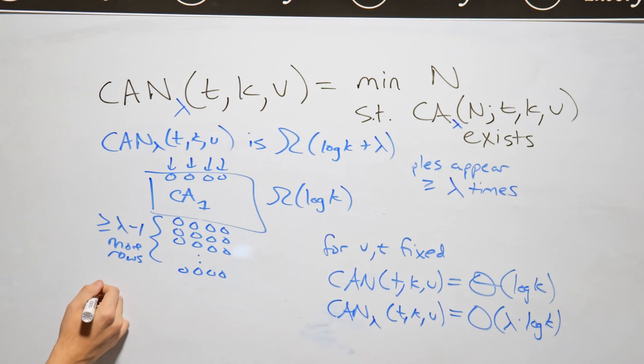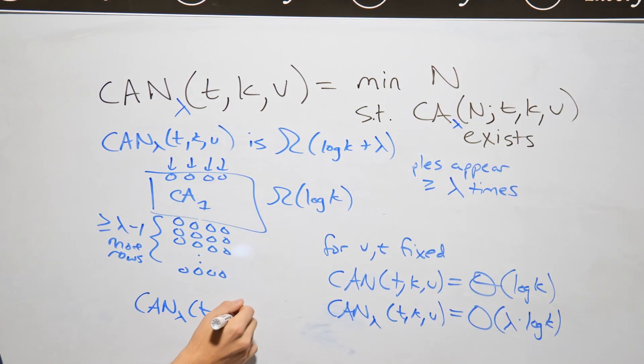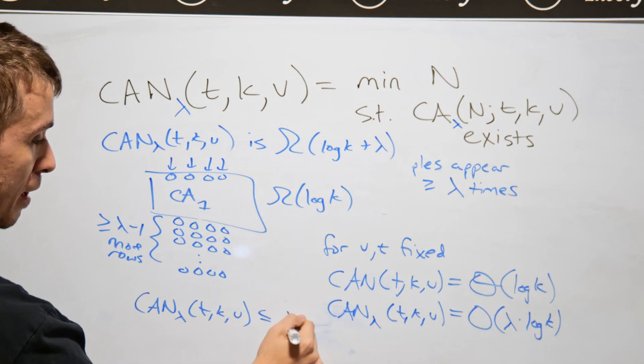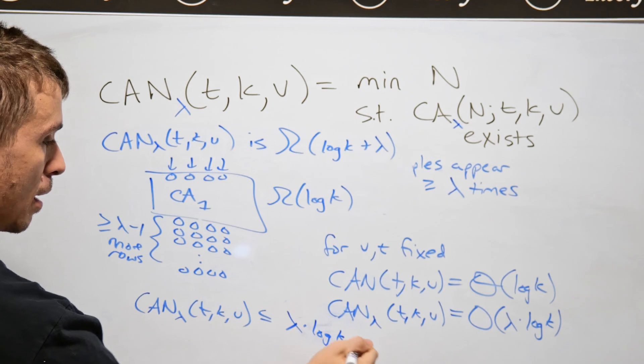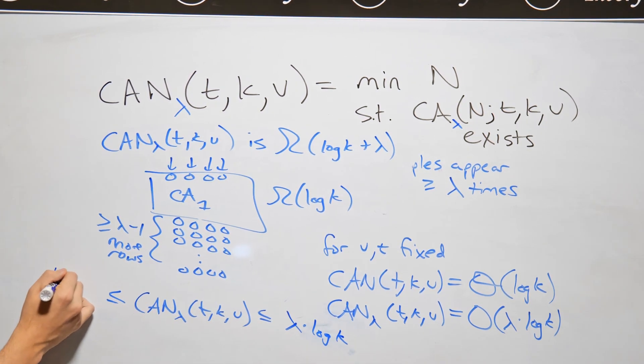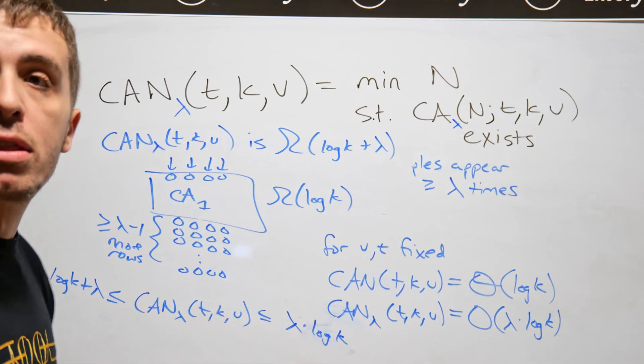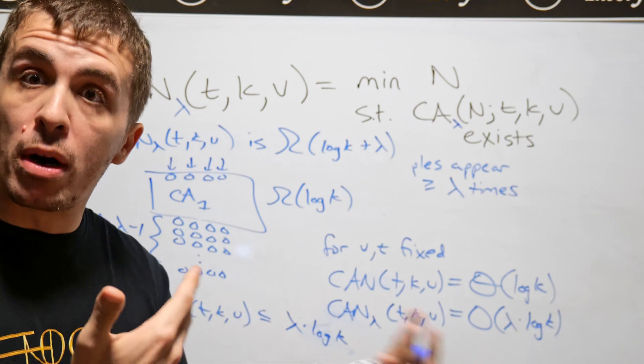Let's summarize what we have. What we have is that CAN lambda t k v is at most, I'm going to suppress the constant here, lambda times log k, and it's at least log k plus lambda. And it's not immediately obvious that where the true bound actually is, whether it's all the way down here, or whether it's up here, or somewhere in between.